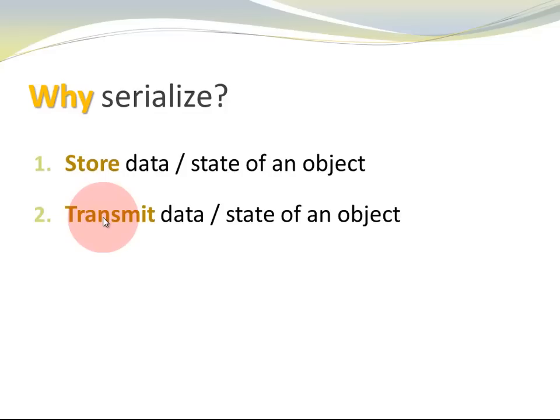Another good reason to serialize is to transmit data or the state of an object. At this point, we are not so concerned about keeping data or a state for a longer time, but about making it available in a different location. When we convert an object to a series of bytes, we can transmit it over a network and then reconstruct it in a different place.